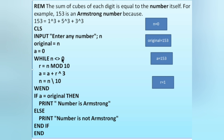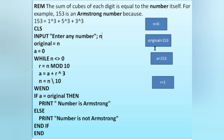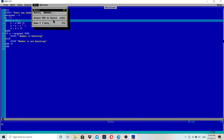When the condition is false, the program jumps to the line after WEND. There, IF a = original — since a is 153 and original is also 153 — the condition is true, and it prints 'number is Armstrong', then reaches END. Your exercise is to try n = 173 using the same process — you will get 'number is not Armstrong'.